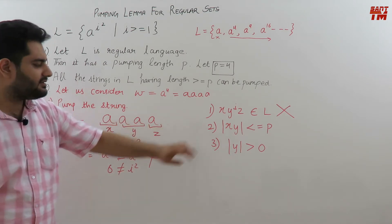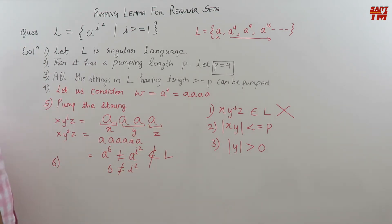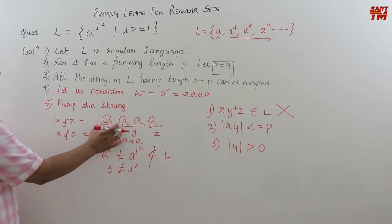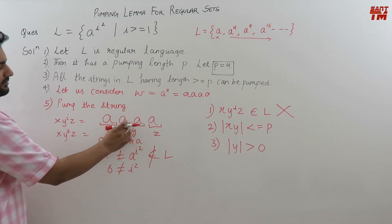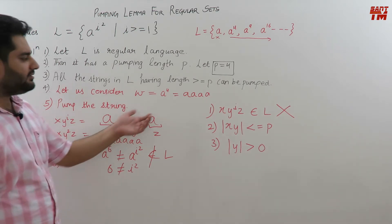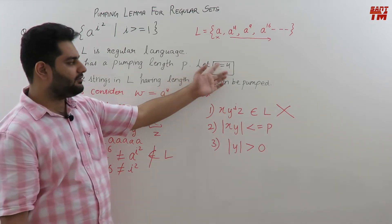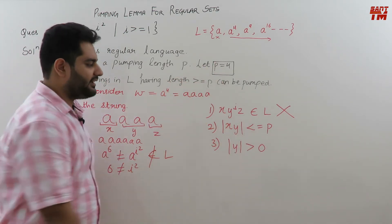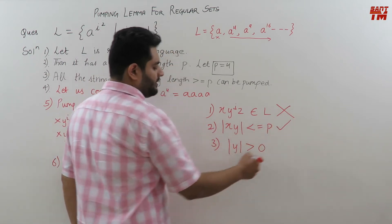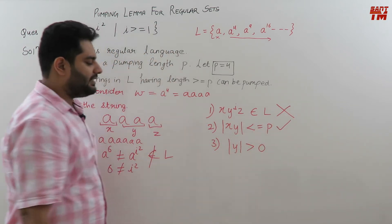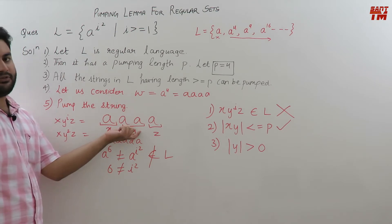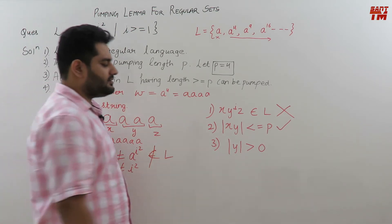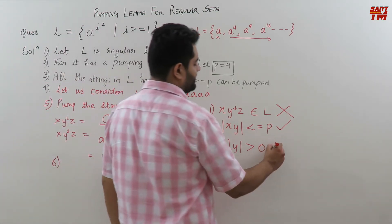The second condition is the length of x·y should be less than or equal to P. The length of x is 1 and y is 2, so 1 plus 2 equals 3, which is less than or equal to 4 — so the second condition is satisfied. The third condition is the length of y should be greater than 0. We have chosen y to have length 2, and 2 is greater than 0 — so the third condition is satisfied.